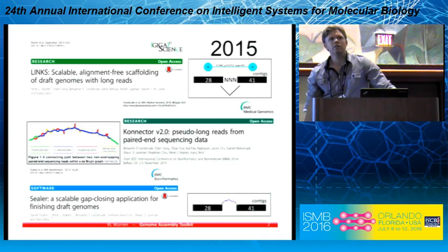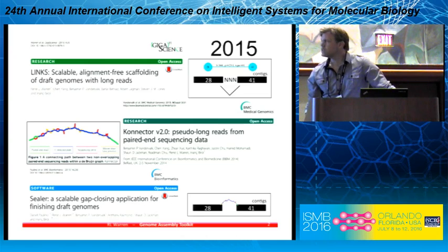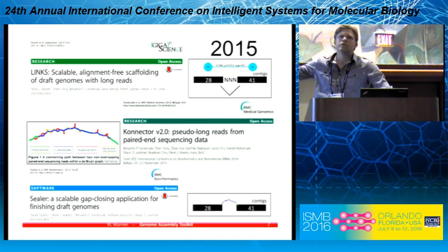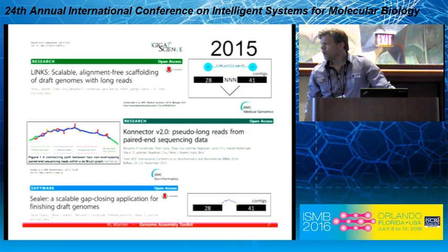So that's a highlights talk. I'm going to talk briefly about that publication. Lynx was published last year in GigaScience. And the second half of my talk, I'll focus on genomics technologies that our group develops at the BC Cancer Agency Genome Sciences Centre in Vancouver.